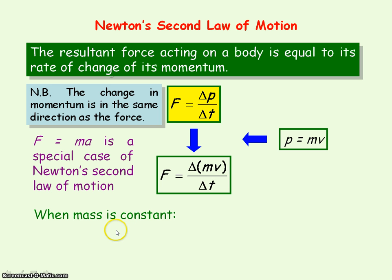If the mass of the object is constant, so it doesn't change, we can take it out of the bracket. So you can say f will equal the mass m times delta v divided by delta t.